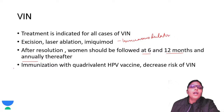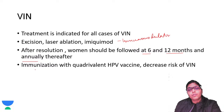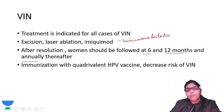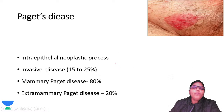Once treatment is done, keep the patient under follow-up at 6 months, 12 months, and then annually. Since VIN is also caused by HPV, the vaccine will be protective against VIN.